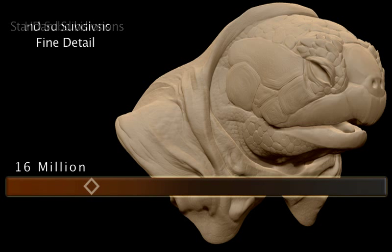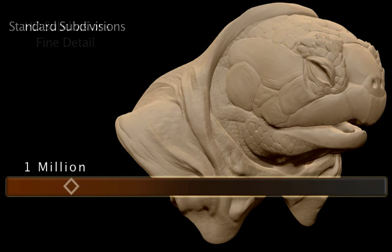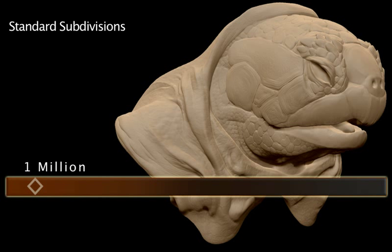If you'll be using HD subdivisions to add all of the finer details to your model, then you will want to make sure that your max standard subdivisions are set no higher than about a million to a million and a half polygons. Keeping your max standard subdivisions at this level will greatly optimize your HD subdivisions, allowing for more efficient HD sculpting as well as faster creation of normal and displacement maps from the HD data.